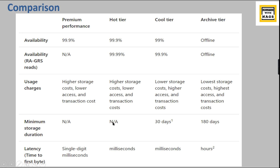Minimum storage duration: Hot has none, Cool requires 30 days, and Archive requires 180 days. For latency — time to first byte — Hot tier responds in milliseconds. Cool tier also responds in milliseconds but takes slightly longer than Hot. Archive tier takes a long time to read from. These are the different options you need to be aware of when choosing an access tier in Azure storage.